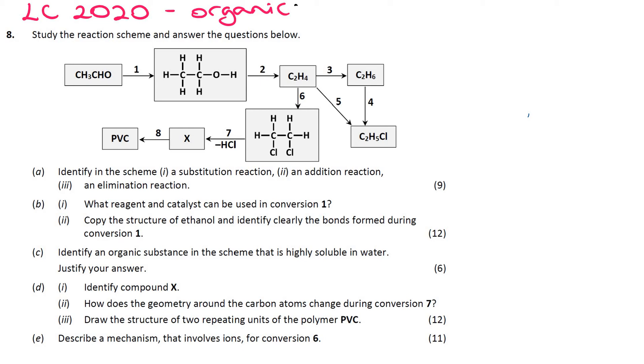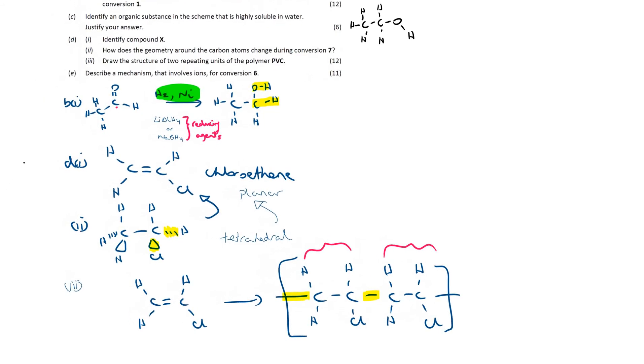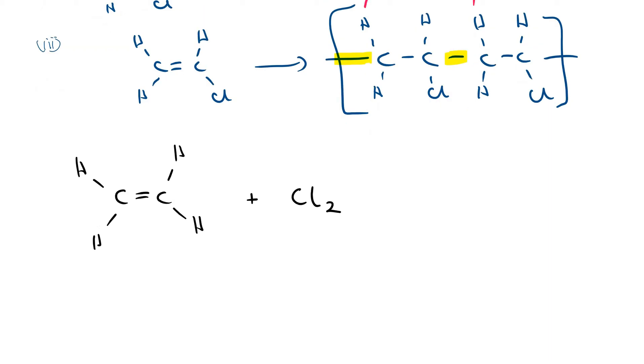Here I'm going to look at an organic chemistry question from Leaving Cert 2020: Describe a mechanism that involves ions for conversion. So you've got ethene and you're adding chlorine to it.